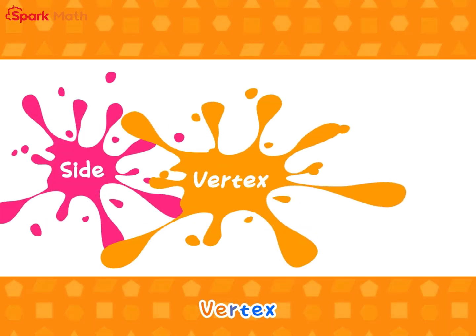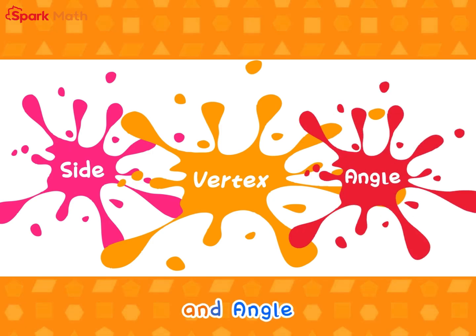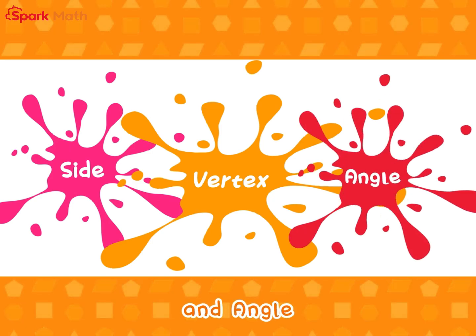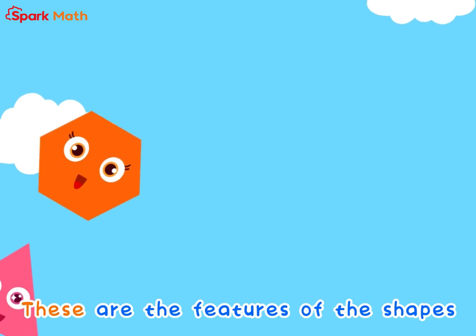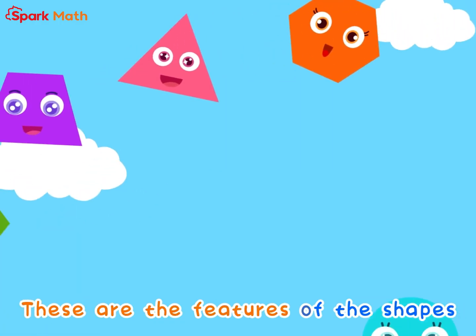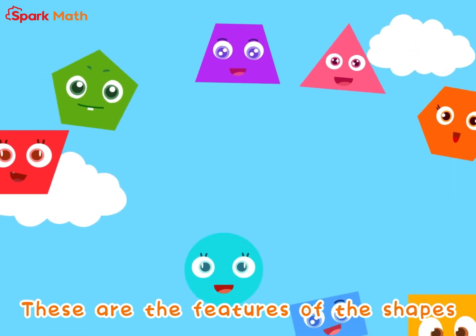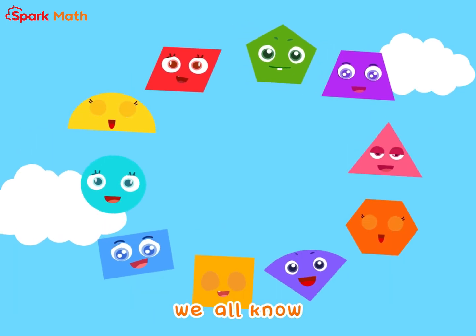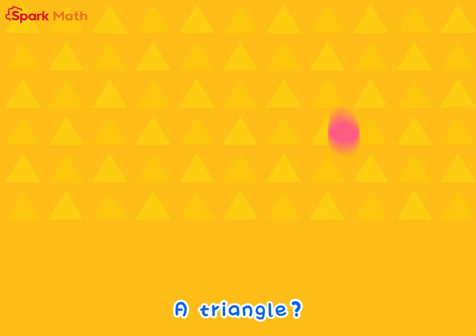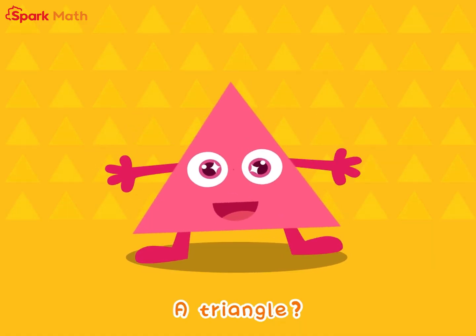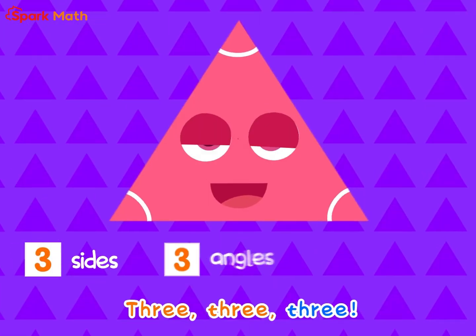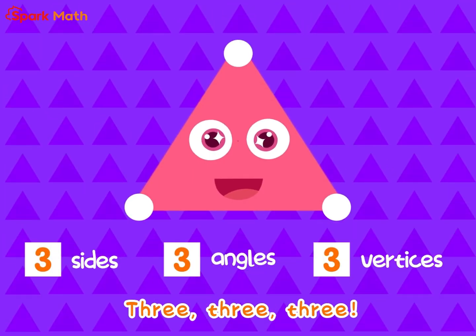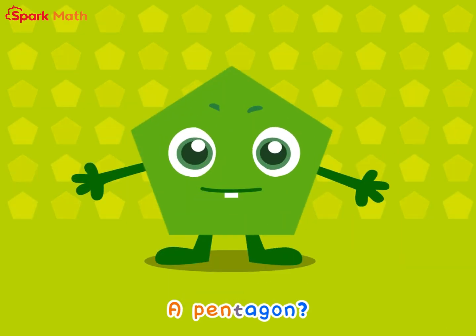Side, vertex and angle — these are the features of the shapes we all know. A triangle: three sides, three vertices, three angles.